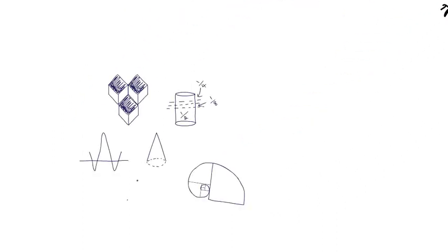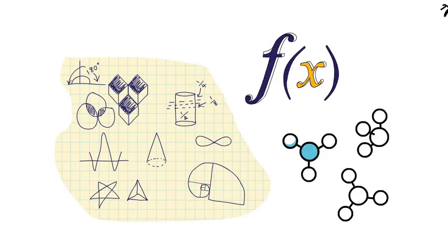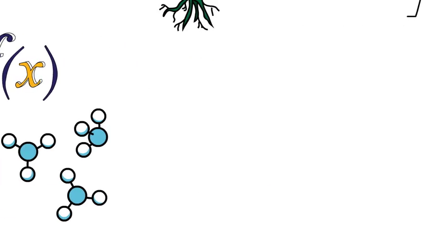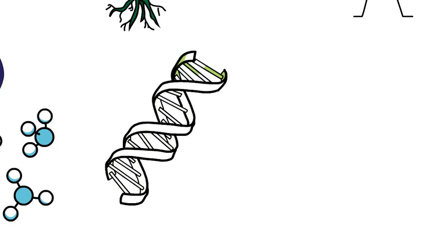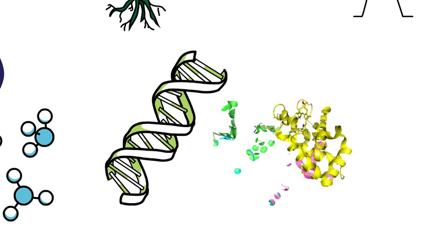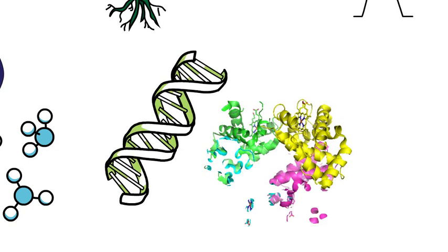In Biology 219, we will use basic principles from the physical sciences to describe and predict how cells work. For example, we will explore the chemical structure and physical shape of molecules such as DNA and proteins.